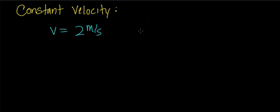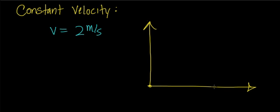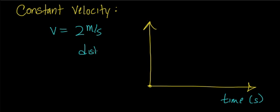So let's first take a look at the distance versus time graph for something that moves with constant velocity. This axis will be in units of time, so in units of seconds. This axis will be in distance, and that will be in units of meters.